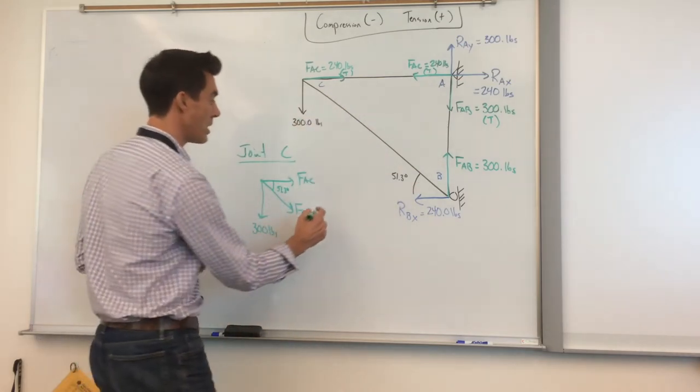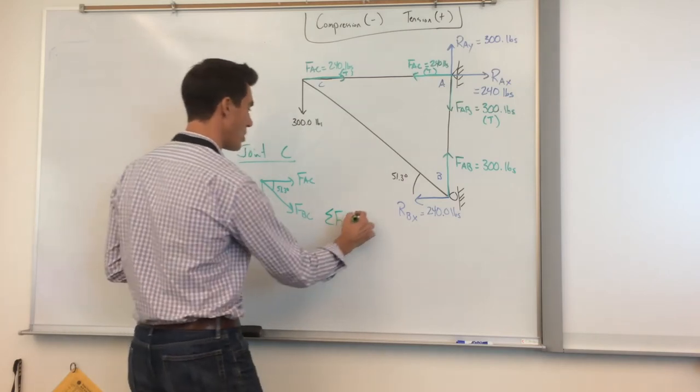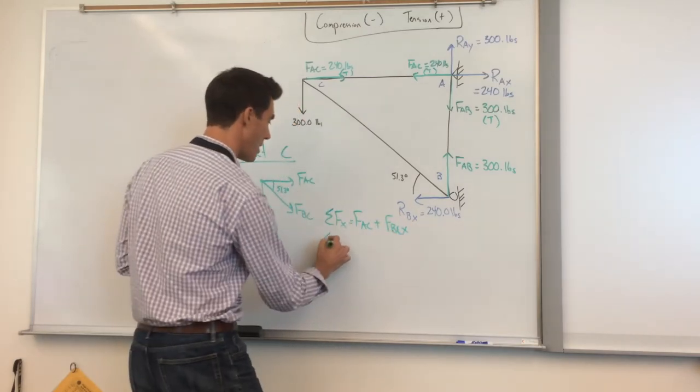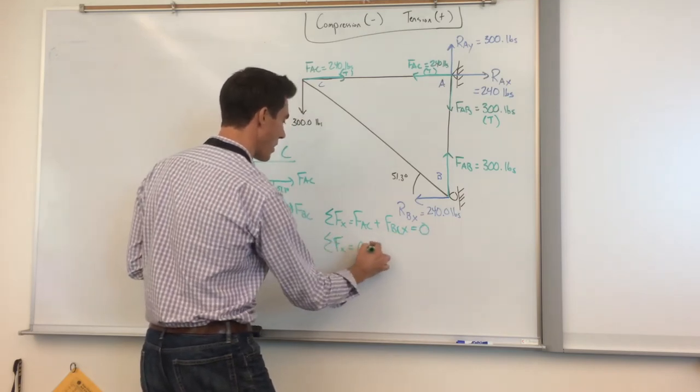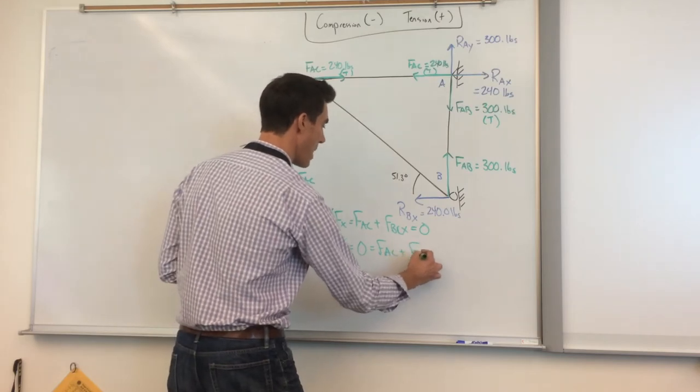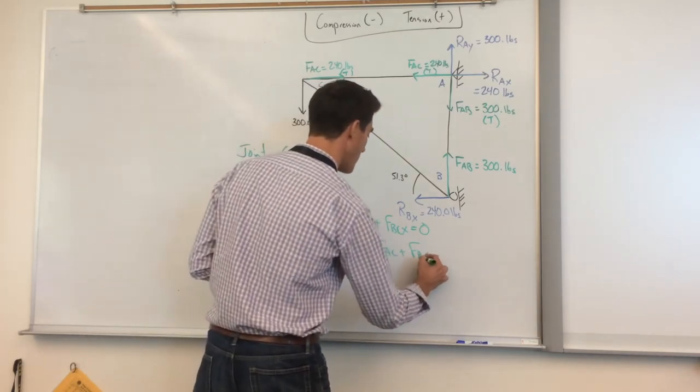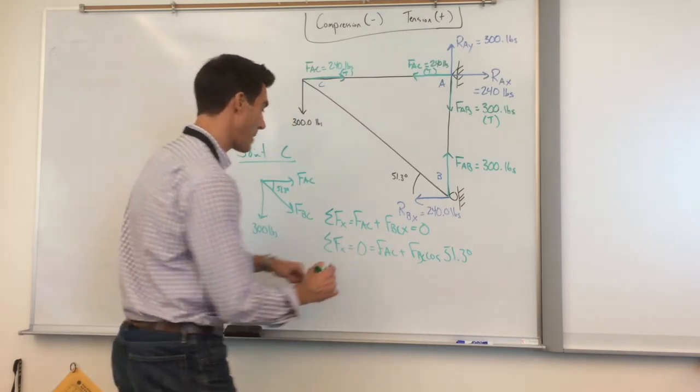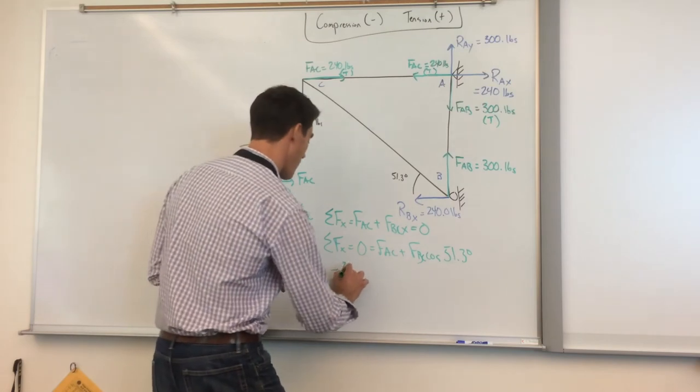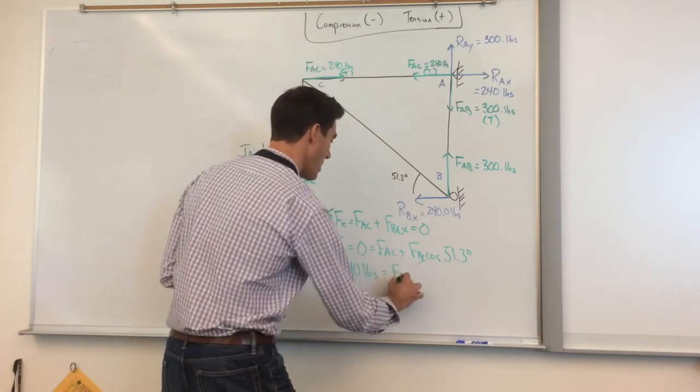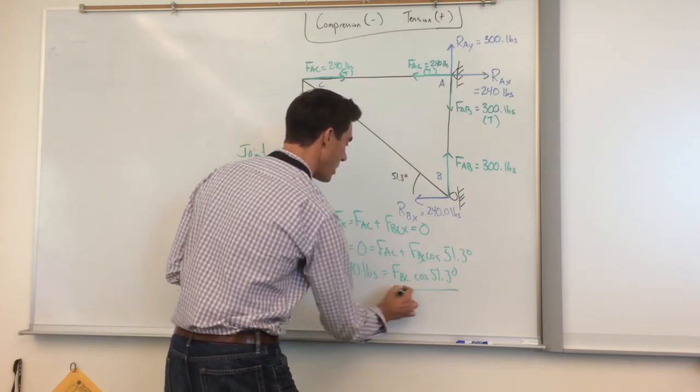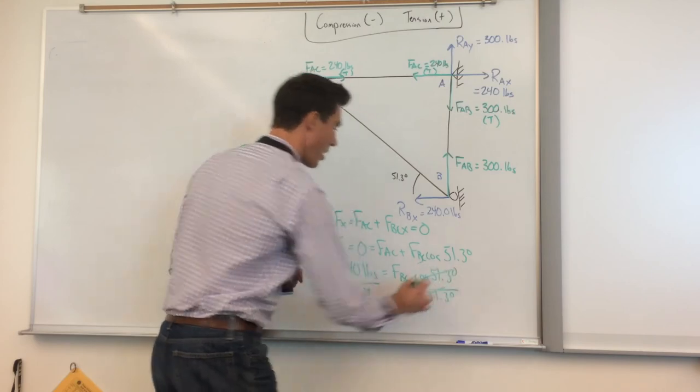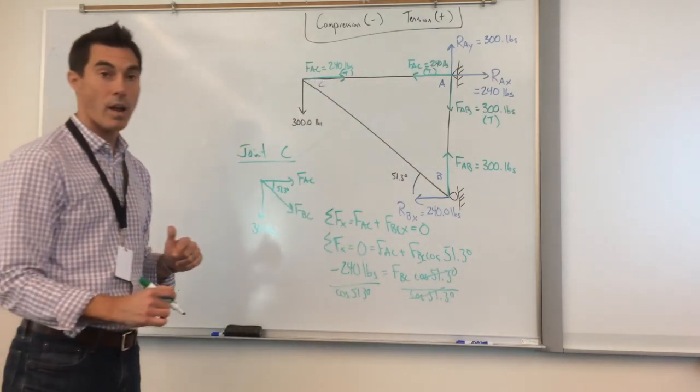Let's just do sum of forces in the X. Sum of forces in the X equals zero. FAC plus FBC times the cosine of 51.3 degrees. I know FAC, so we can put the numbers in. I'm also gonna subtract that to the other side. So negative 240 pounds is equal to FBC times the cosine of 51.3 degrees. Divide both sides by the cosine of 51.3. And you'll get the answer of 384.